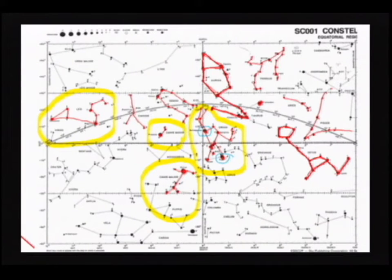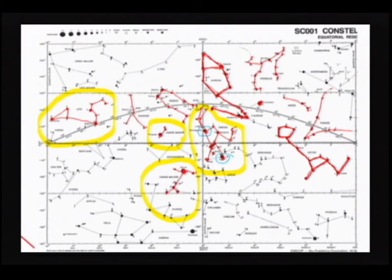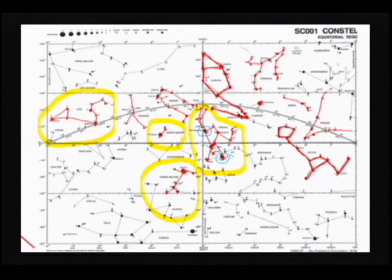Now let's head over to Leo the Lion. It is one of the constellations of the Zodiac and is incredibly easy to recognize. When you see Leo, you get the sickle part — which is the head of the lion — and then you can kind of see the body coming back out. The sickle part kind of looks like a big question mark in the sky, and then the body is behind it.